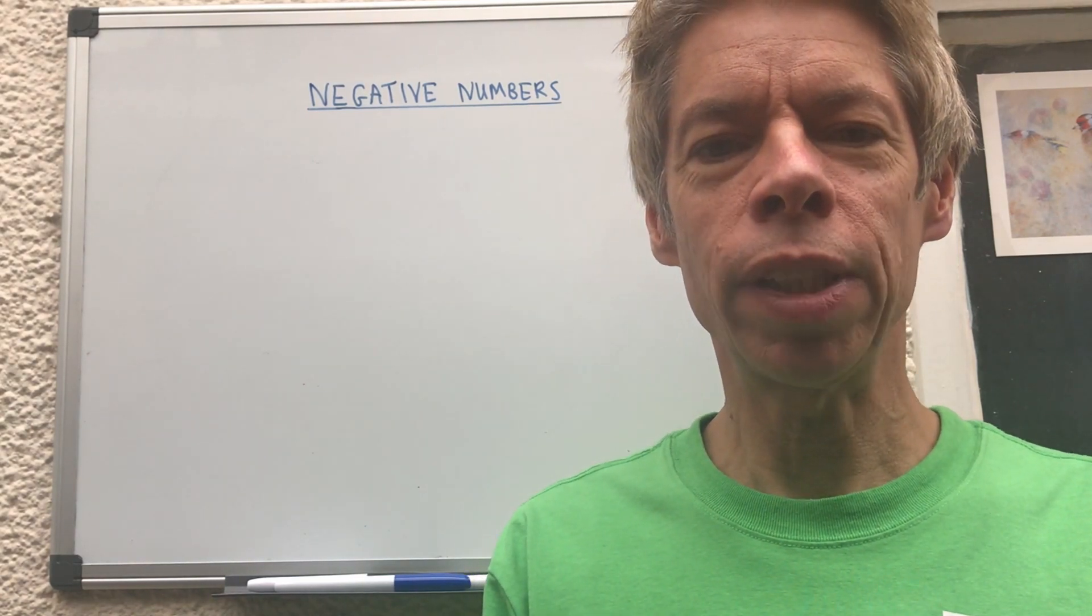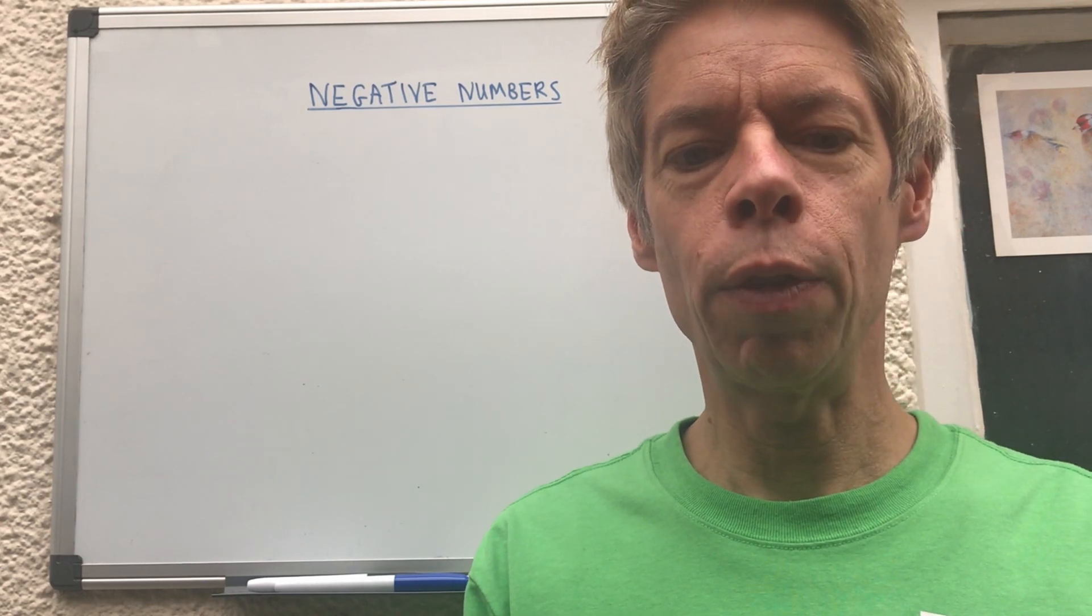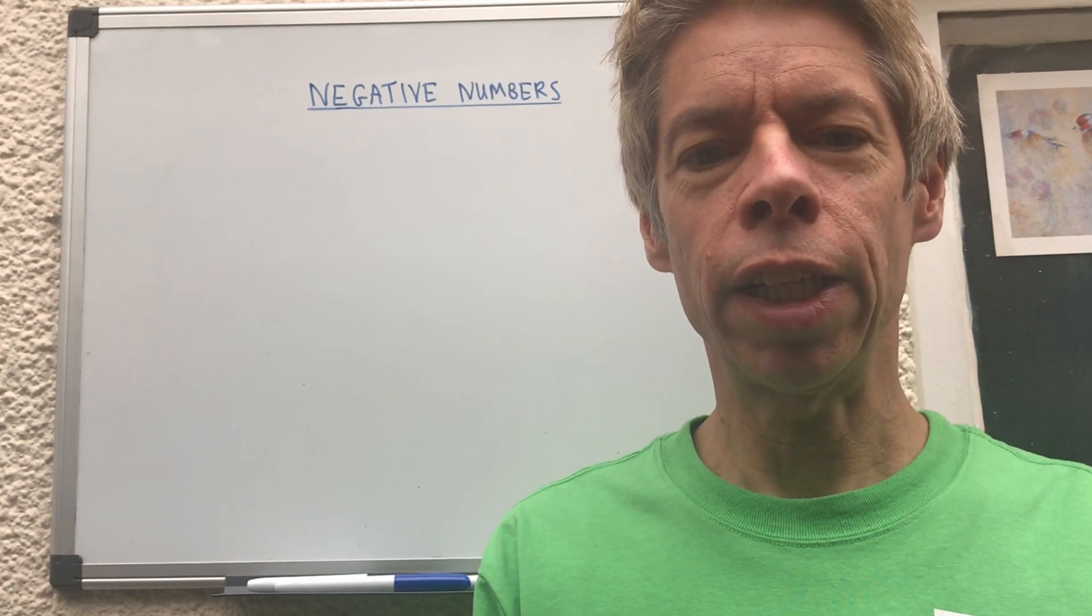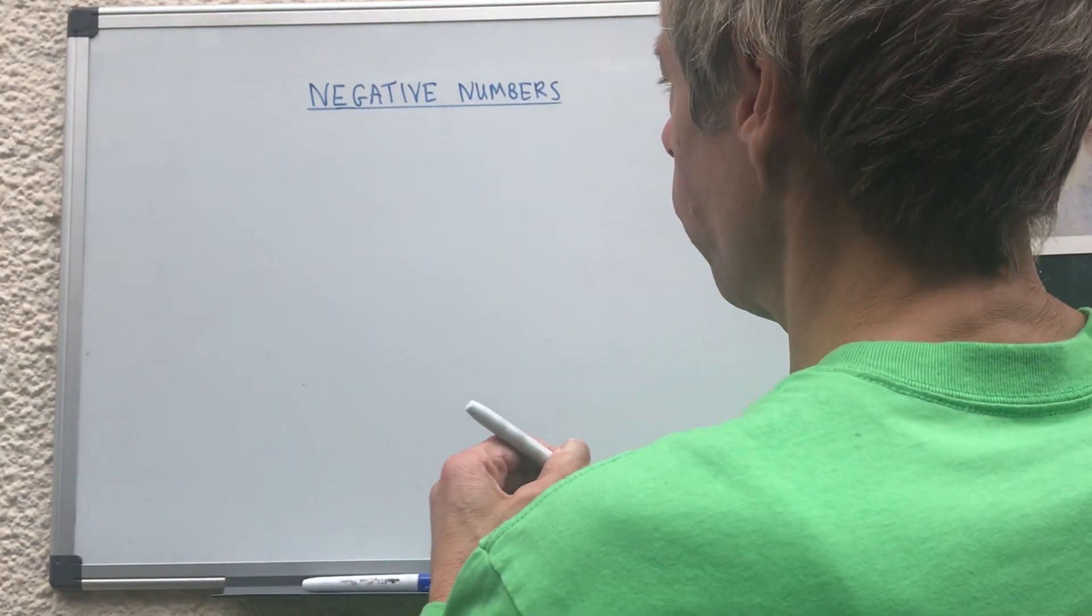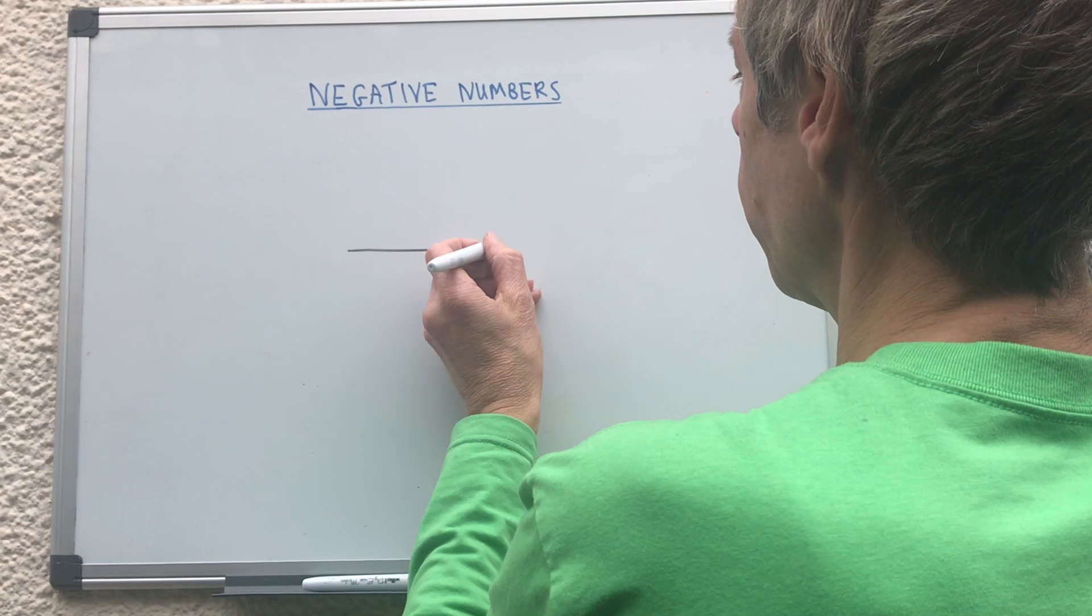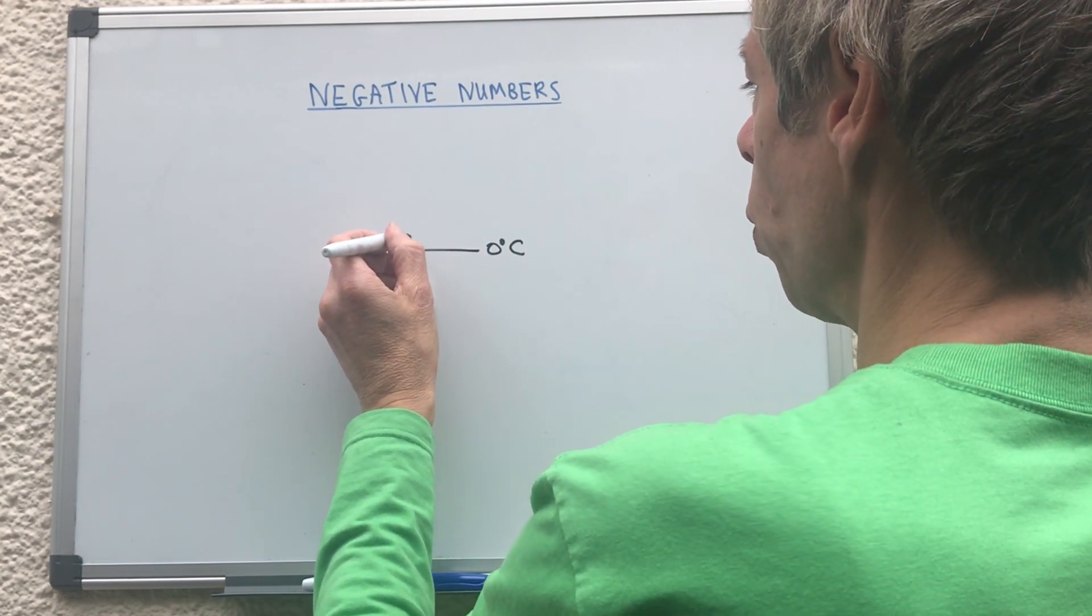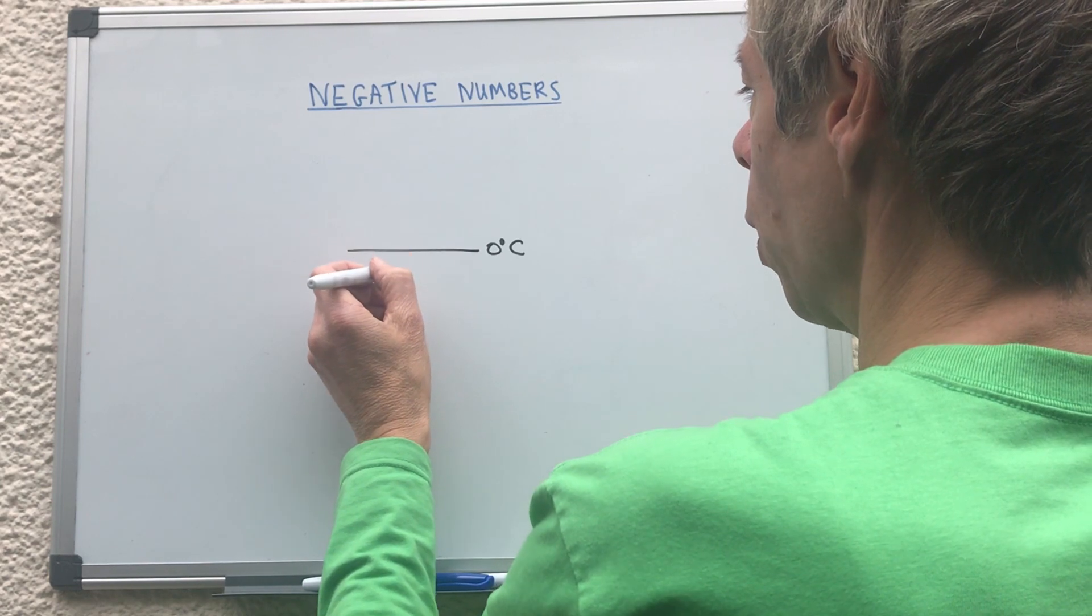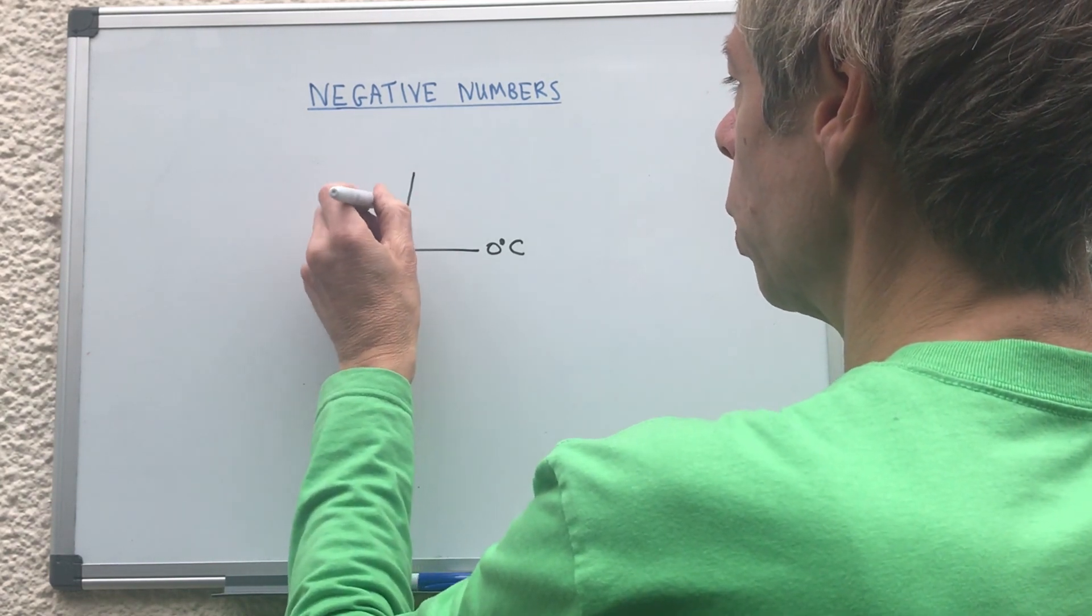So where we do meet negative numbers in everyday life, in the winter the temperature could go below freezing. So freezing is zero, so you've got zero degrees C, that's freezing, so if the temperature drops below freezing it could go to one, two, three.